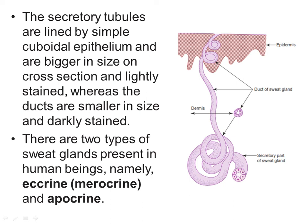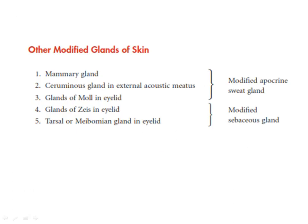There are two types of sweat glands in humans: eccrine (merocrine) and apocrine. Modified glands of the skin include mammary glands, ceruminous glands in the external acoustic meatus, glands of Moll in the eyelid, glands of Zeis in the eyelid, and tarsal (Meibomian) glands in the eyelid. These are modified apocrine sweat glands, while the others are examples of modified sebaceous glands.